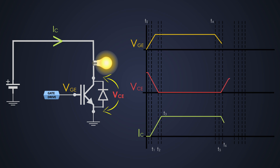VGE keeps on decreasing and reaches its final negative value at time T7 and stays constant after that. The collector current is decreasing and collector-to-emitter voltage is increasing at this time. At time T8, the collector current reaches 10% of the maximum value. After that, at time T9, the collector-to-emitter voltage of the IGBT reaches 90% of its maximum value. Finally, at time T10, the IGBT completely turns off, where the collector current is zero and collector-to-emitter voltage is at the maximum input voltage.